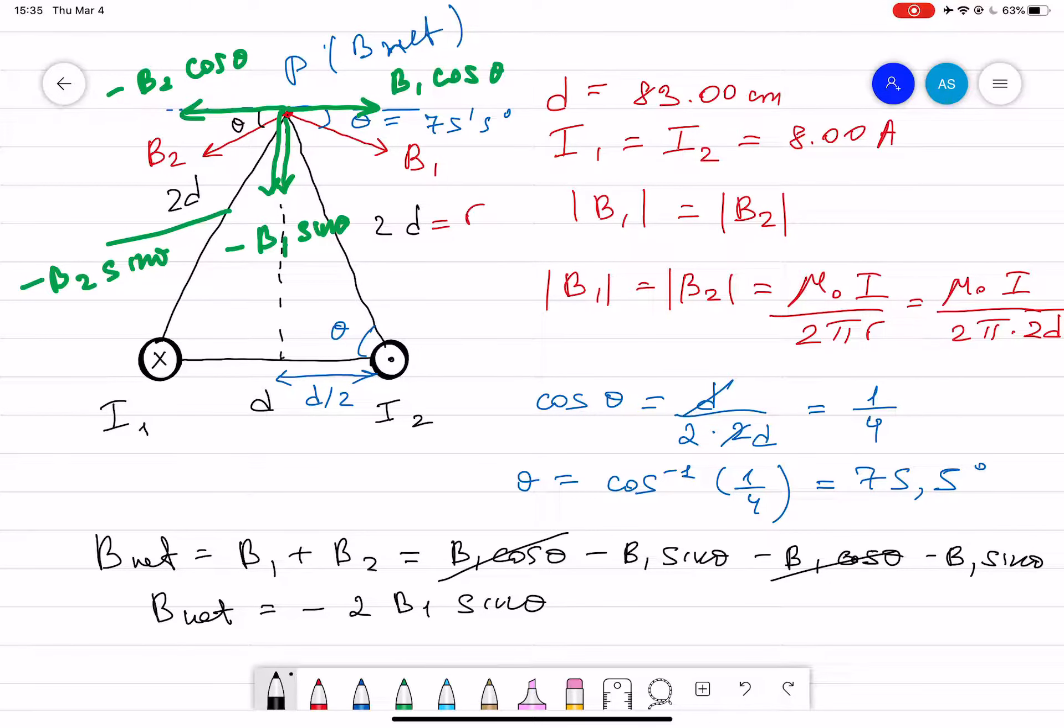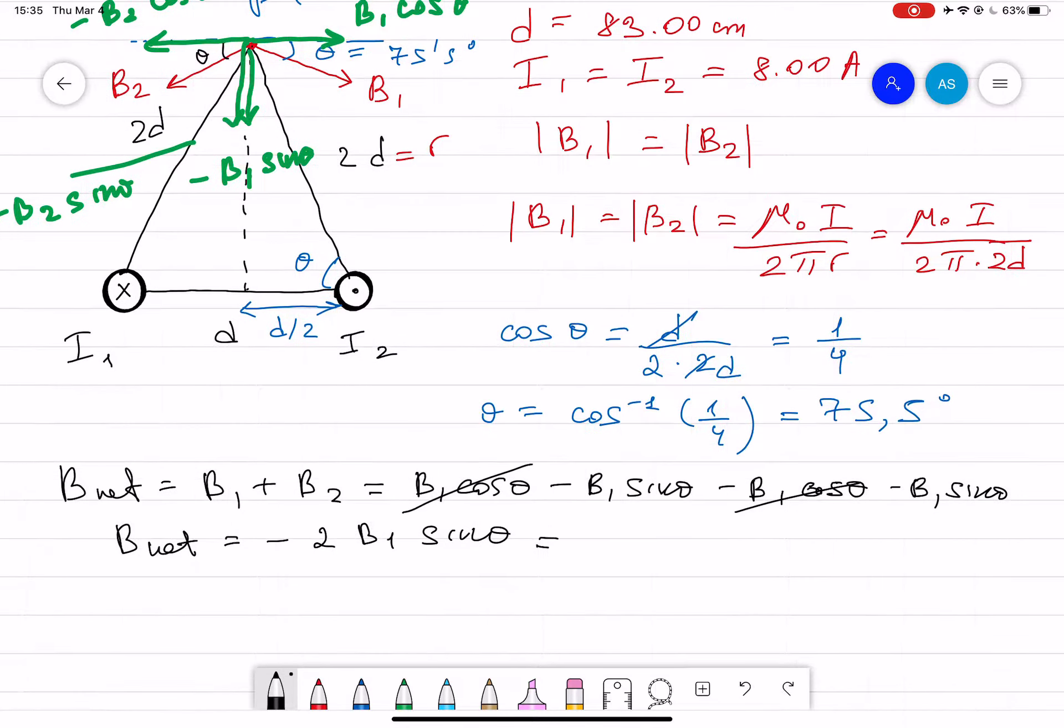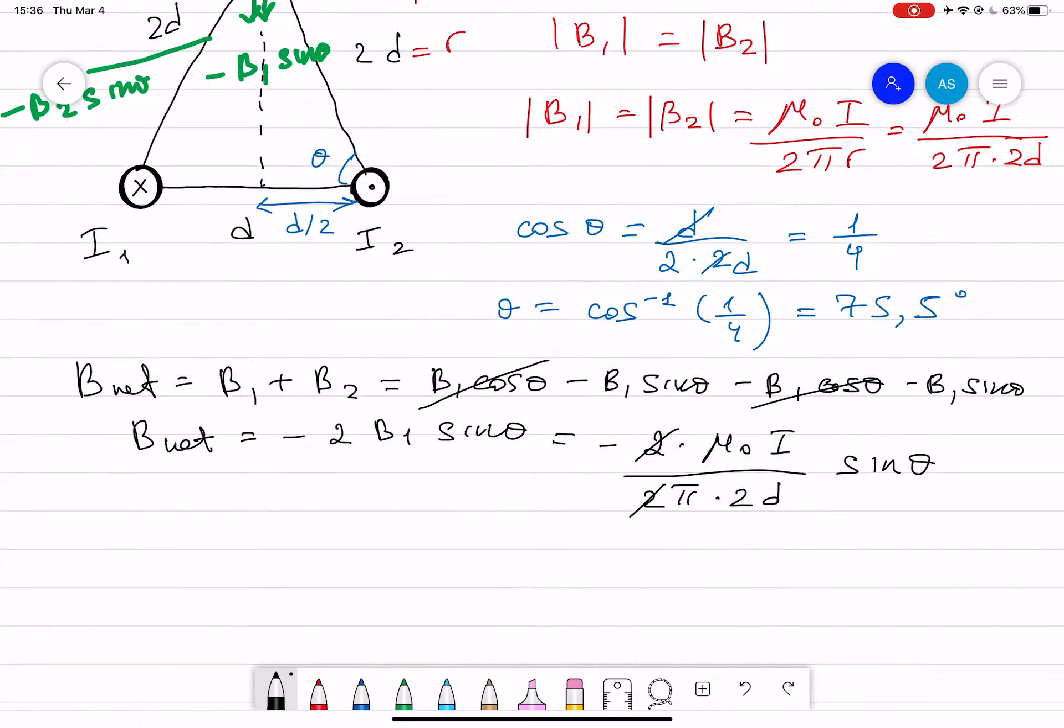Then finally, let's plug the numbers. So B in our case is equal to minus 2 multiplied mu_0 I divided by 2 pi multiplied by 2d. Now this 2, 2 will cancel out, then we still have here sine theta. Then we have negative mu_0 is equal to 4 pi times 10 to the power of minus 7, current, now since we have current 1 and current 2 equal to each other but opposite in direction, then it's divided by 2 pi d sine theta.